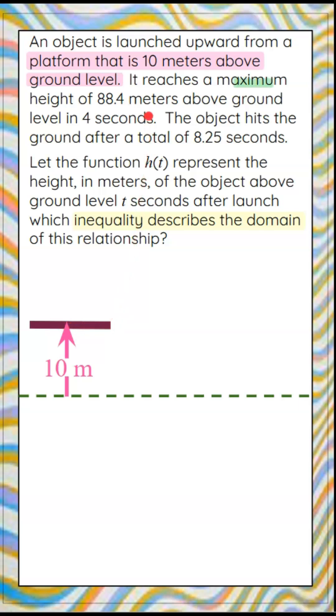The next piece of information is we're told that the object goes a maximum height of 88.4 meters above the ground. So we're on the platform. We launch the object, and its height is going to be 88.4 meters above the ground.